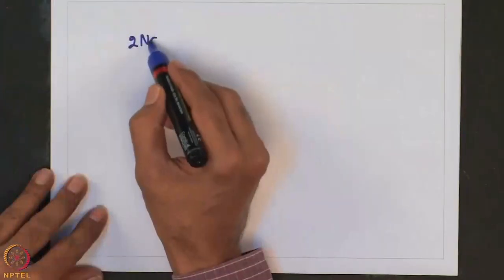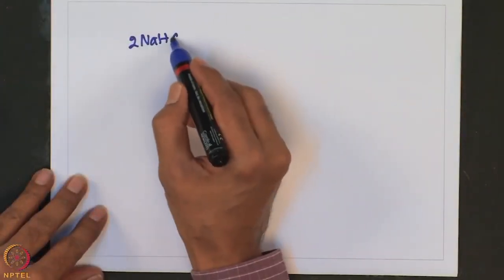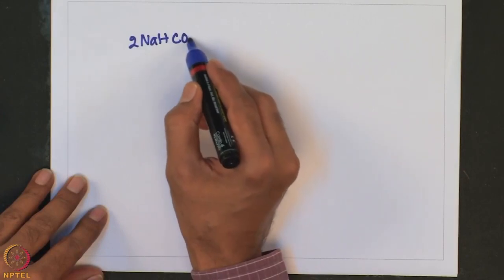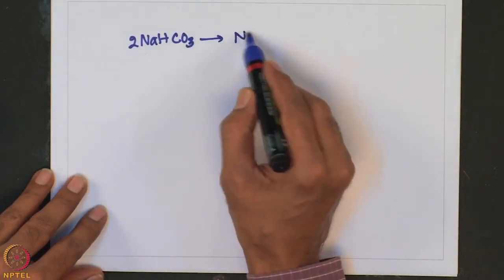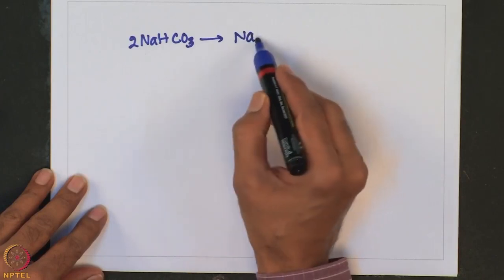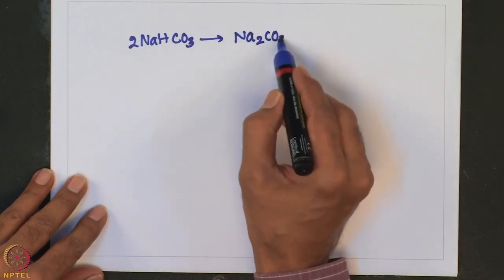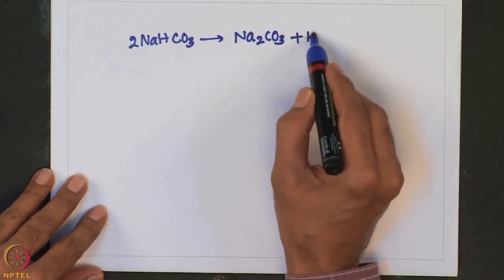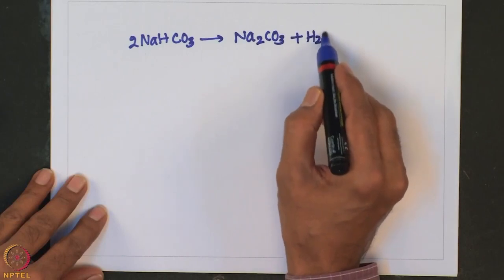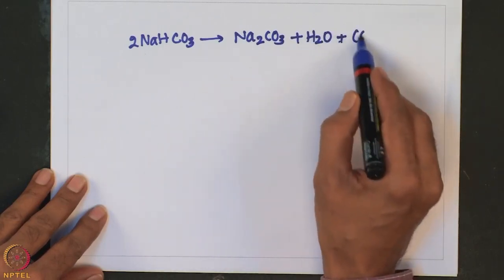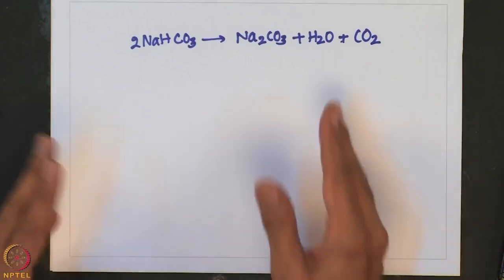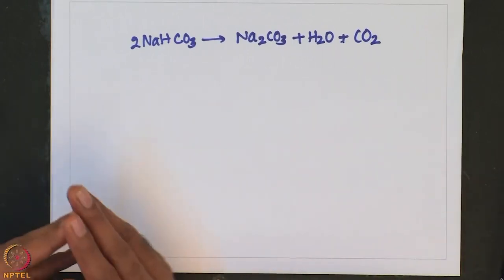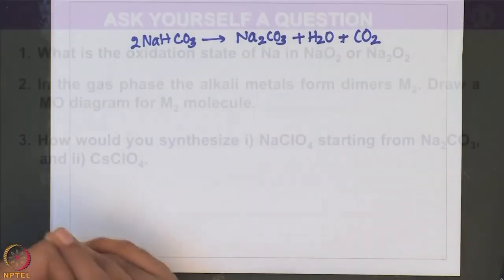Looking at the reaction: sodium bicarbonate on heating gives sodium carbonate plus H₂O plus CO₂. This CO₂ is used in the fermentation process and also in bakery products.